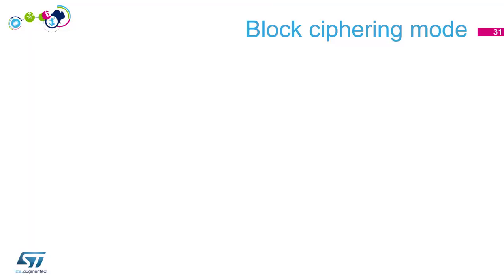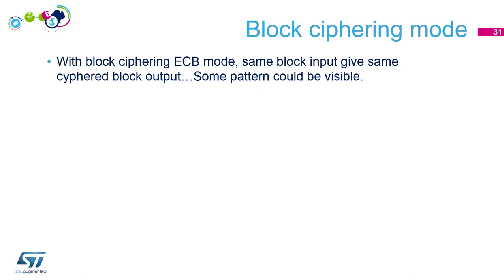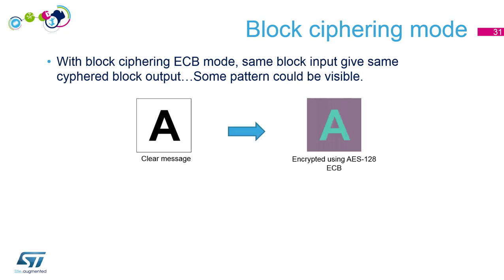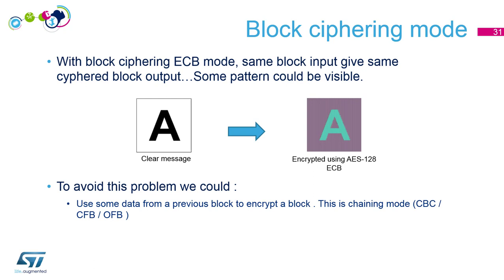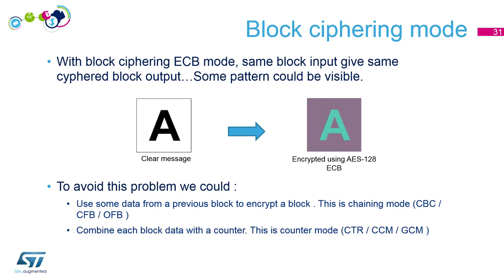Let's talk about block ciphering modes. We saw that with ECB, if a block is exactly the same you get the same encrypted result. If you encrypt a clear image — which is just color values per byte — you can still see a pattern. There are two ways to address this: first, use data from the previous block to encrypt the next (chaining mode: CBC, CFB, OFB); second, combine each block with a counter (counter mode: CTR, CCM, GCM).